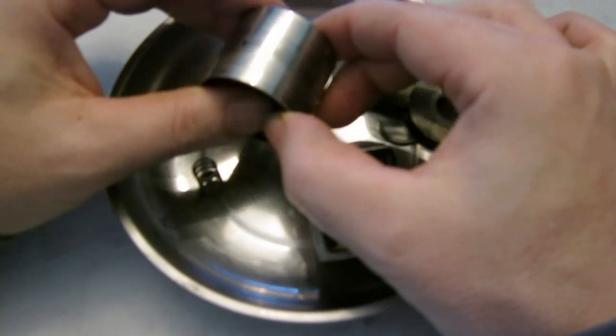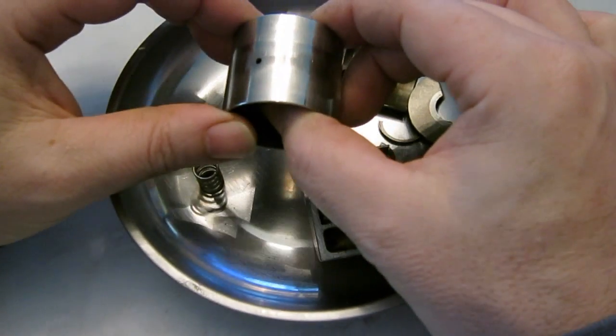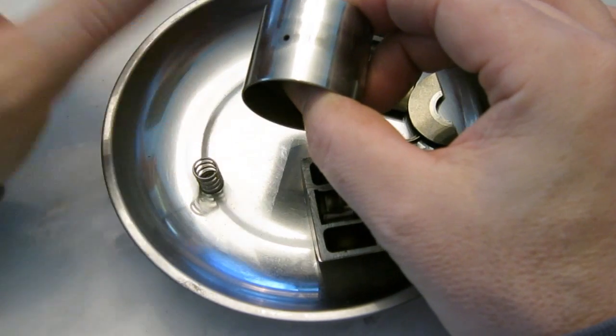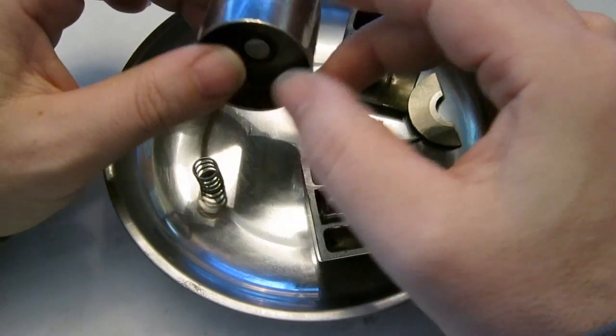Old time valves had to be adjusted with like feeler gauges and little set screws or shims to get the right clearance between the tappet or the lifter and the valve.